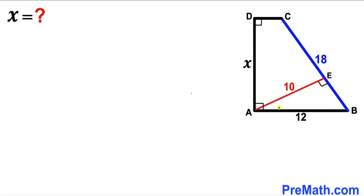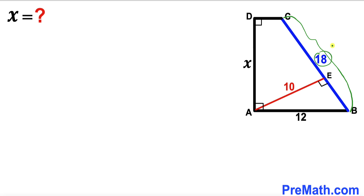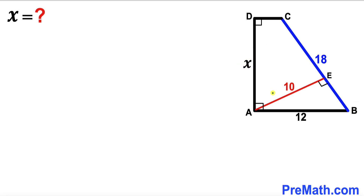Welcome to pre-math. In this video we have got this trapezoid ABCD as you can see in this diagram, such that its side length AB is 12 units, its side length BC is 18 units, whereas its side length AD is being represented by X units. Moreover this perpendicular AE is 10 units, and our task is to find the value of X — in other words, we are going to calculate this side length AD.